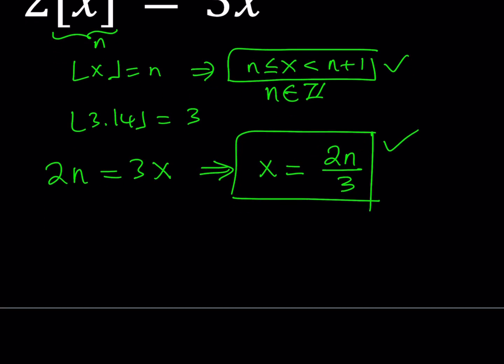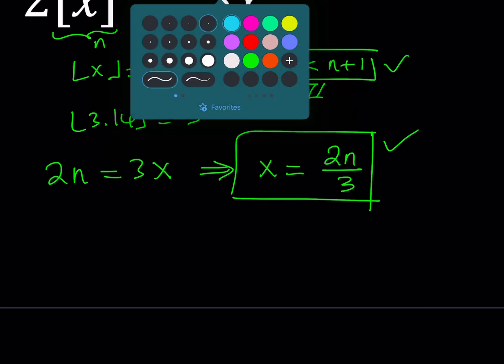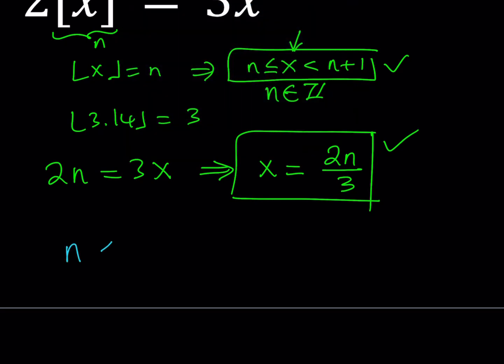Well, obviously, if x is equal to 2n over 3, I can replace this x here with that one. So I can just write this inequality as n less than or equal to 2n over 3, which replaces x. And then I have the n plus 1 here. So basically, what it comes down to is solving this inequality. I should say probably a system of inequalities because we do have two inequalities here. But remember that n is always an integer here.